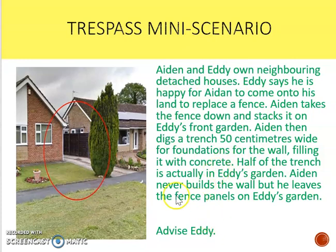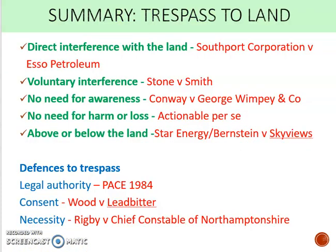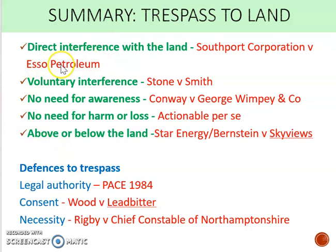Before highlighting the key issues in the scenario, it's useful to remind ourselves of what the law on trespass to land is. Switching back to our summary slide: trespass to land is quite straightforward — there aren't many requirements to prove. You need direct interference with the land; it must be voluntary; there's no need for the person to be aware that they're trespassing because it's actionable per se, meaning in and of itself, and there's no need for harm or loss. You can also have trespass above the land — such as a drone flying over your house — or below the land, if someone's digging under your property.